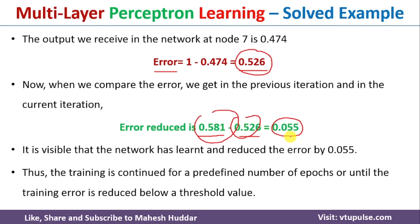In this video, we discussed what a multi-layer perceptron network is and how we can propagate the input forward from the input layer neuron to the output layer neurons, as well as propagate the error in the backward direction. I hope the concept of a multi-layer perceptron network is clear. If you like the video, do like and share with your friends, press the subscribe button for more videos, and press the bell icon for regular updates. Thank you for watching.